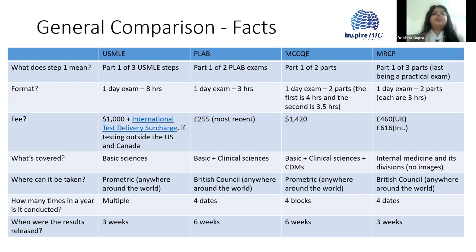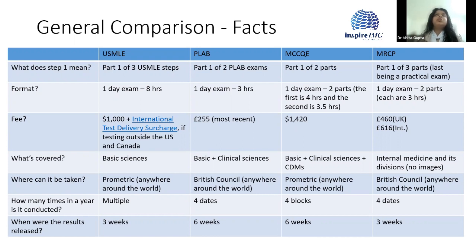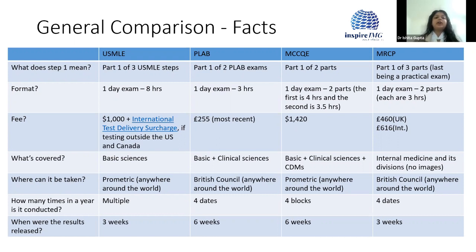For PLAB, part one is part of a two-part exam — PLAB one and PLAB two. PLAB two is a practical exam, while PLAB one is a written test. Together, the two tests certify that you have competency to get a license in the UK. For QE1 from Canada, it sits somewhere between the US and UK systems, more towards the US. The MCCQE part one is again part of a two-part exam — the second being practical and the first being written.